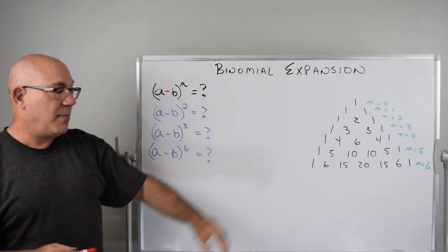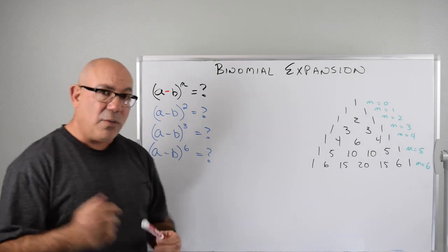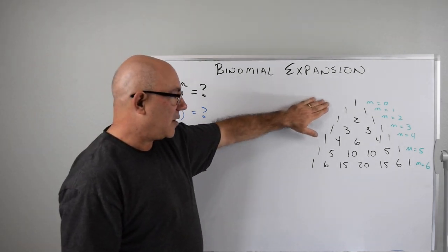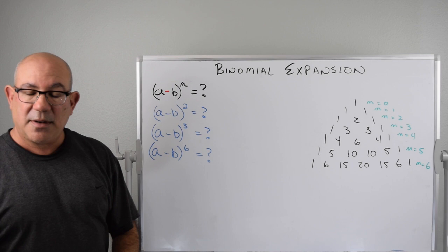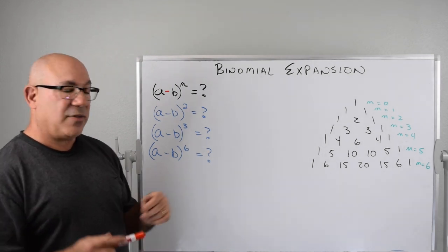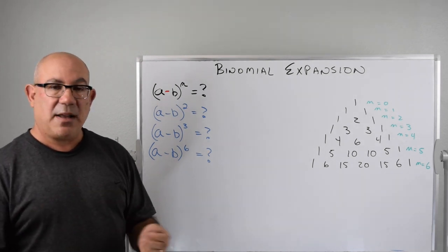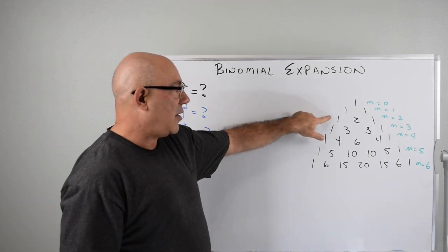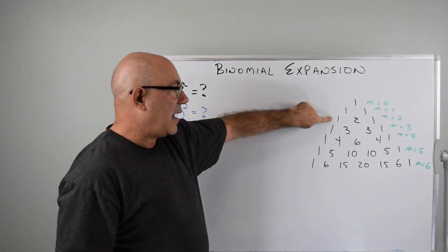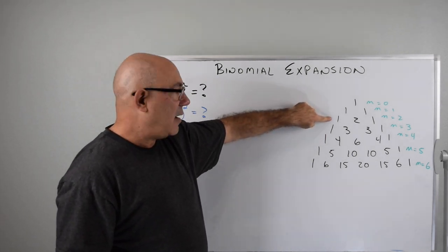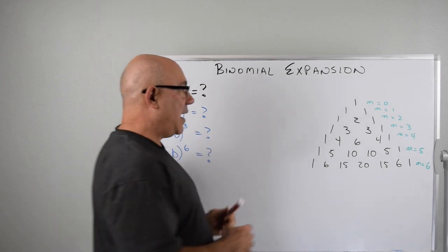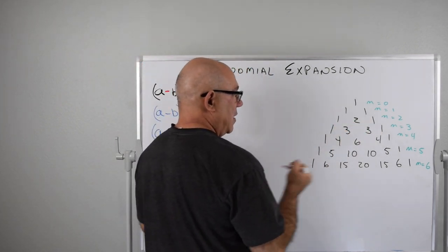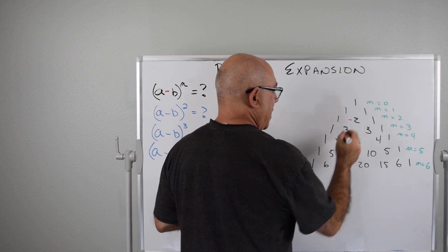Since we have a negative term, we can develop Pascal's Triangle just like we do for the positive binomial expansion, but now we have to introduce some negative numbers. It's a simple trick — you go down, start at n equals two, and every other term will be negative. So in this case we have a minus here.